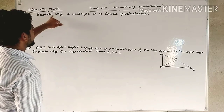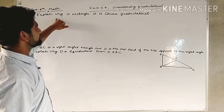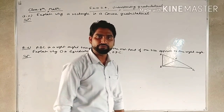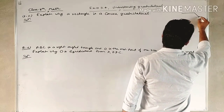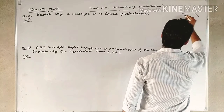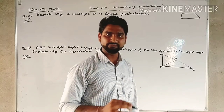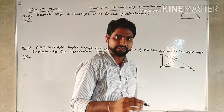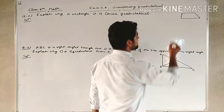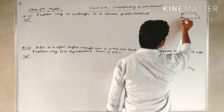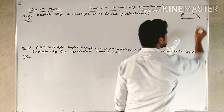Question number 5 is asking: explain why a rectangle is a convex quadrilateral. So we need to explain that a rectangle is a convex quadrilateral. What is a convex quadrilateral? A convex quadrilateral is one where all interior angles are less than 180 degrees — this angle, this angle, this angle, and this angle are all less than 180 degrees.